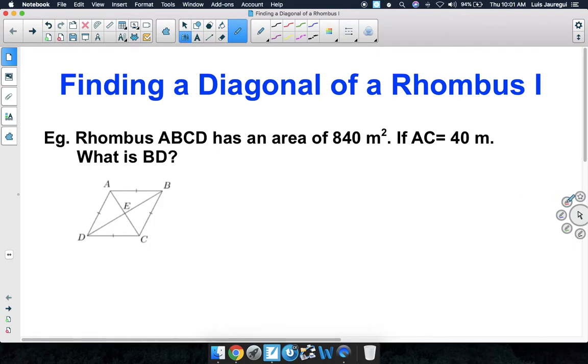Example: Rhombus ABCD has an area of 840 square meters. If AC is equal to 40 meters, what is the length BD?